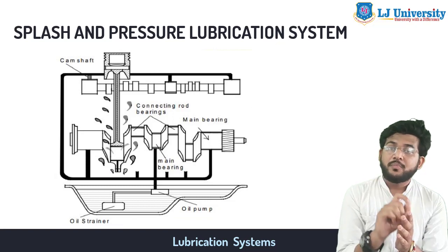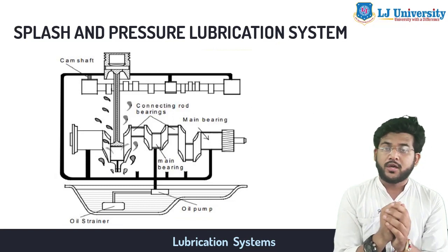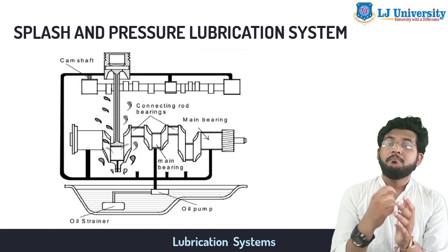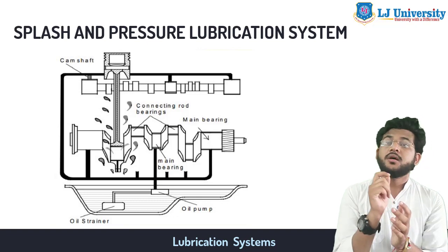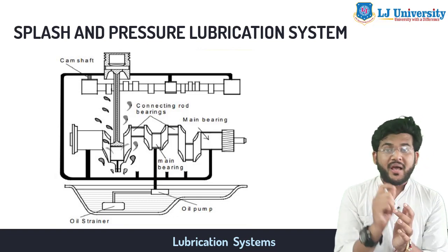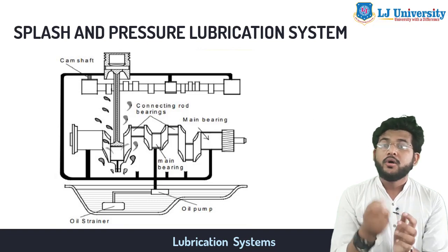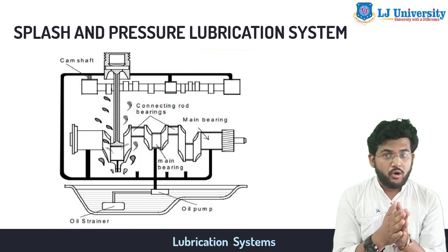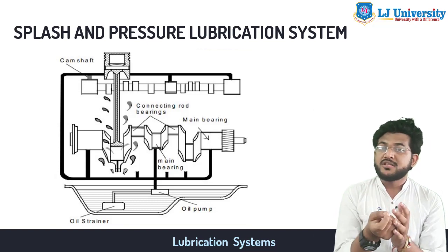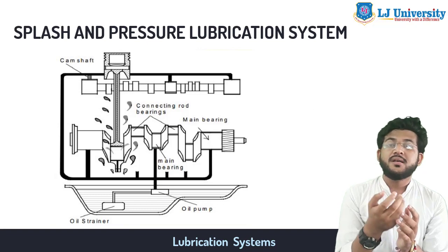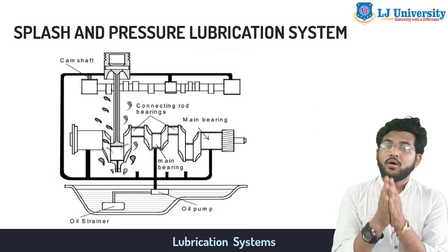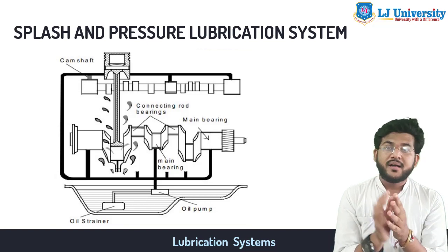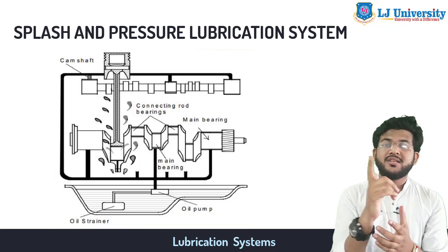The third sub-type is the splash plus pressure lubrication system — a mixture of both. The splash system alone is not sufficient when bearing loads are very high. Hence, lubricating oil under pressure is supplied by the oil pump to the main and crankshaft bearings. The oil pump also supplies oil under pressure to pipes which direct a stream of oil against the scoops, the connecting rod, and the bearing cup. Other parts are lubricated the same as in the splash system.